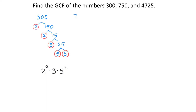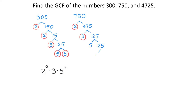Next, we will find the prime factorization for 750. 750 divided by 2 is 375. 375 is divisible by 3 because if we add the digits 3, 7, and 5, we get 15, and 15 is divisible by 3. So, 375 divided by 3 is 125. 125 is not divisible by 3, but it's divisible by 5. 125 divided by 5 is 25, and 25 divided by 5 is 5. The prime factorization for 750 is 2 times 3 times 5 cubed.